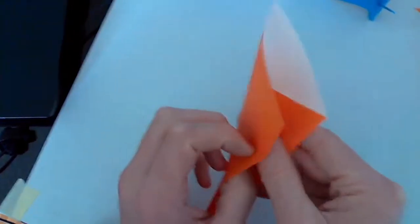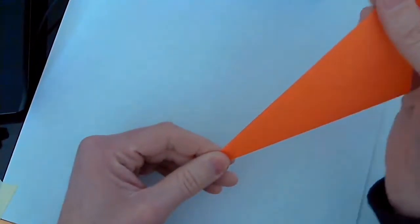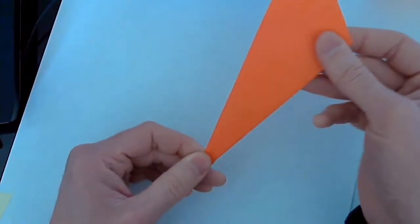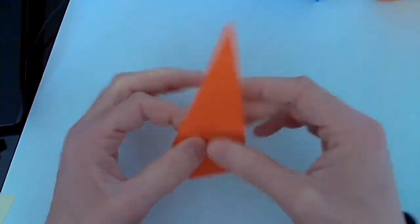Fold everything in half and again smooth out the crease. Flip it over.